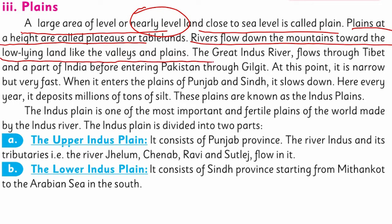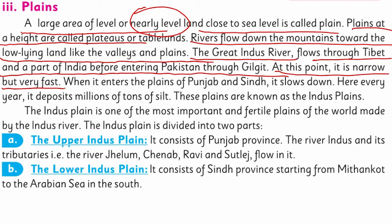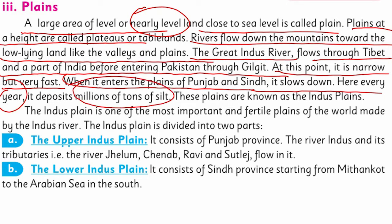Rivers flow down the mountains toward the low-lying land of valleys and plains. The great Indus River — Daryaye Sindh — starts from the Tibetan Plateau, passes through a part of India before entering Pakistan through Gilgit. Here it is narrow but very fast. When it enters the plains of Punjab and Sindh, it slows down and deposits millions of tons of silt every year. These plains are known as the Indus Plains.